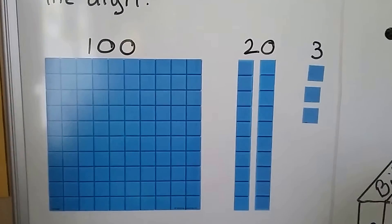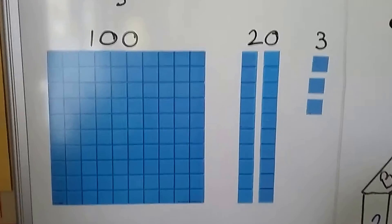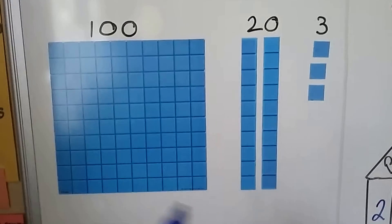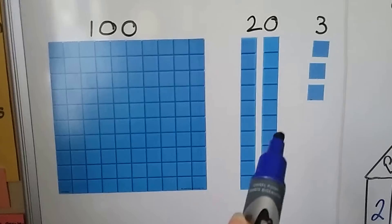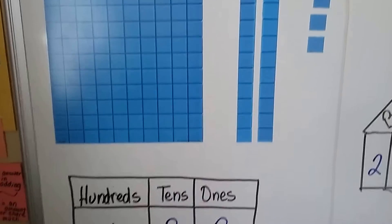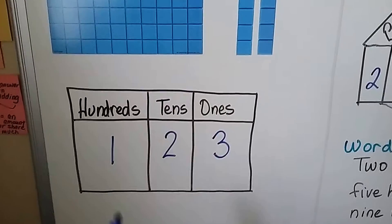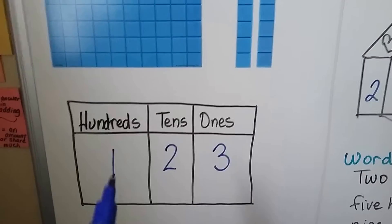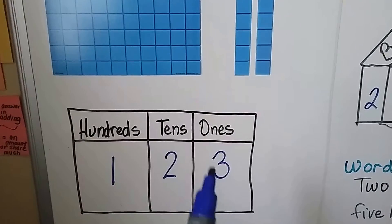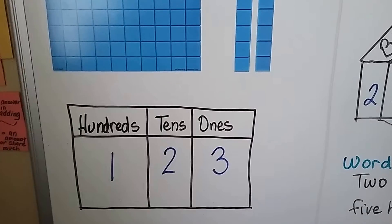I've got these counters here to help us. We can see there's a 100 — there's 100 squares here. Each of these are a 10, so we have two 10s. We have three 1s. In place value, we have 1 in the hundreds place, 2 in the tens place, 3 in the ones place. We have 123.